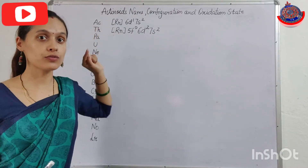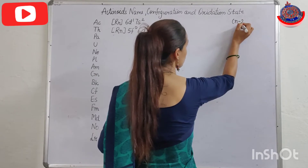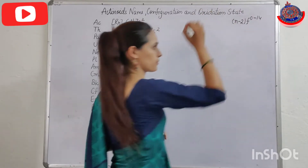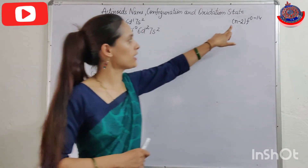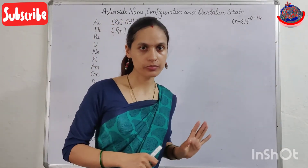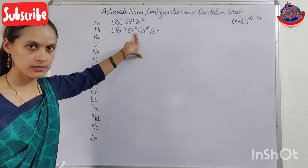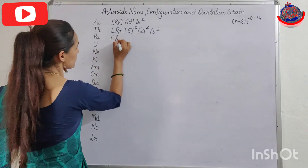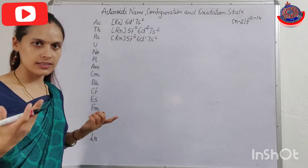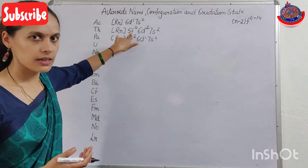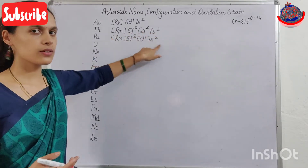Because of Thorium only, when we write the general configuration of F-block elements we write: (n-2)f 0-14. Because in Thorium's f orbital there are 0 electrons. Now continuing: skipping 1 means we write 2 in 6d. So the next elements follow as: [Rn] 5f2, 6d1, 7s2; then [Rn] 5f3, 6d1, 7s2; then [Rn] 5f4, 6d1, 7s2.